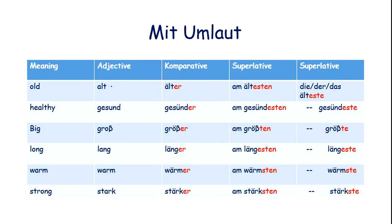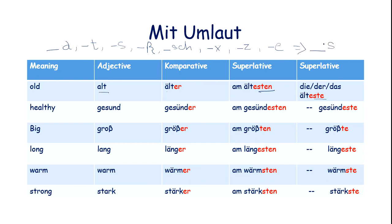After that, there is Mit Umlaut. We add Umlaut on A, R, T, L and -sten or -ste. If the adjective ends with -d, -t, -s, -ß, -sch, -x, or -z, then the Superlative form is -esten. For example: alt, älter, am ältesten. If you see Groß — it does not change to -esten. This is an exception — Ausnahme — with groß: it is the same like -t, we only add -ten.